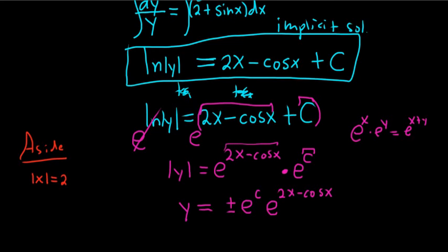Say you had the absolute value of x equal to 2. So if you think of the absolute value of x as the distance between x and 0, you're saying that x is a number whose distance from 0 is 2. There's two numbers who have a distance of 2 from 0. Those numbers are 2 or negative 2. Likewise here, the absolute value of y is equal to this stuff over here. So y is equal to this stuff or the opposite of that stuff.